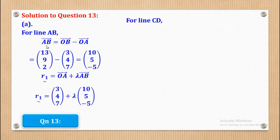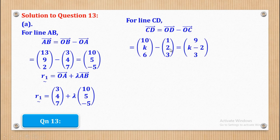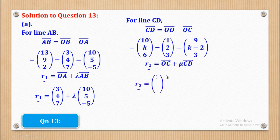For line CD I do the same. I find CD = OD minus OC, which gives (9, K minus 2, 3). After that the line equation is R2 = OC + μ·CD. So OC is (1, 2, 3) and CD is (9, K minus 2, 3). Those are the two vector equations for lines AB and CD.